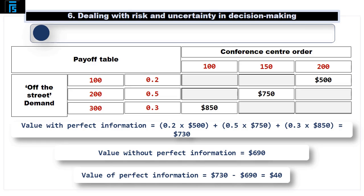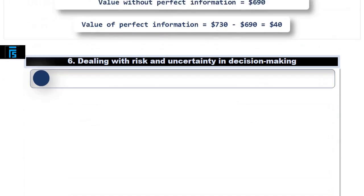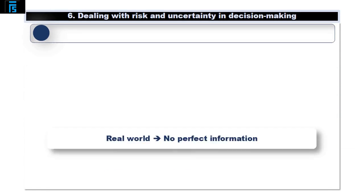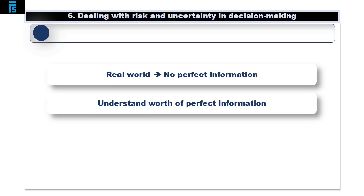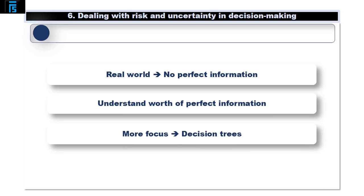The value with no such information was the expected value calculated before the mysterious phone call, which was $690. The value of the perfect information is therefore $730 less $690, which is $40. Provided he can purchase the information for less than $40, he will be improving his overall outcome by doing so. Of course, in the real world no information is perfect, but this helps us understand how much worse off we are because of a lack of perfect information, and how much imperfect information that reduces — even if it doesn't completely eliminate — uncertainty might be worth. More on this later when we look at decision trees.